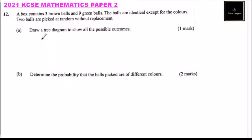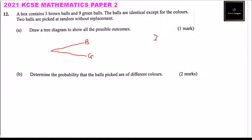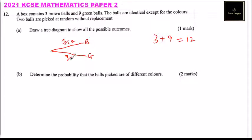Part A: Draw a tree diagram to show all the possible outcomes and you get one mark. So the tree diagram would look like this. You may start by picking a brown ball or a green ball. There are three brown and nine green, so that totals to 12 balls. The probability of picking a brown is three out of 12, and the probability of picking a green is nine out of 12.